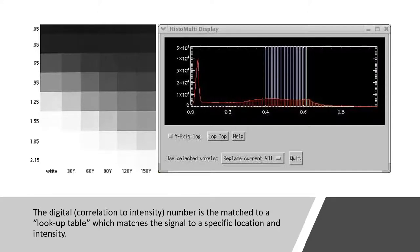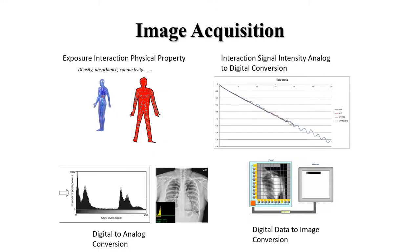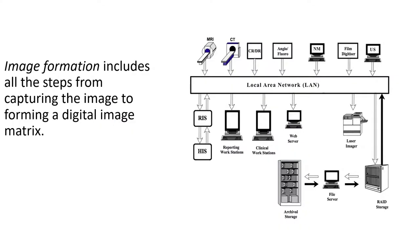The digital number, which is the correlation of number to intensity, is matched to a lookup table which matches the signal to a specific location and intensity using a histogram. The histogram is a two-dimensional map of the intensities. The histogram is created from the exposure interaction of physical properties and the modality. We take the information from the histogram and convert it back to visible light, which we can see on our monitor, which is digital data to image conversion.